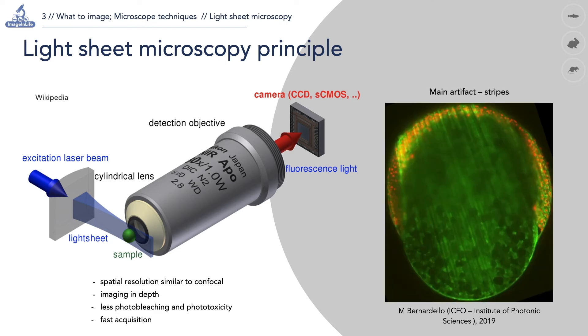The light sheet microscopy architecture brings an imaging artifact in the form of dark stripes. They happen because of the absorption of light by dense objects on the light path.